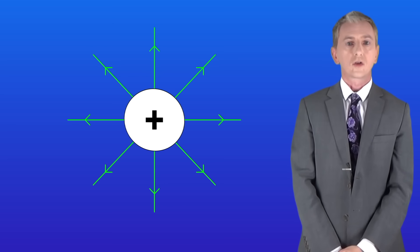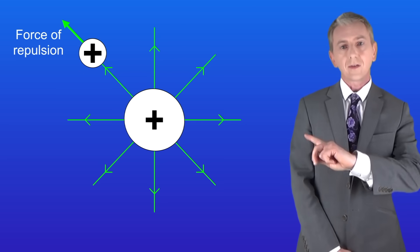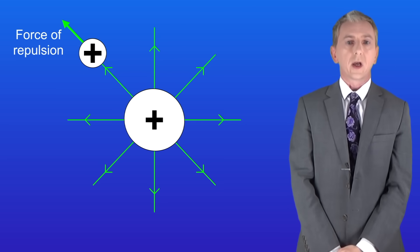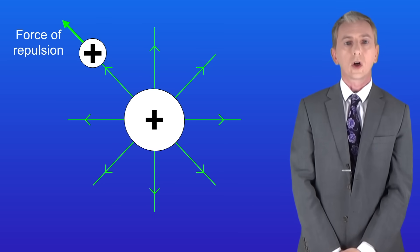Now the arrows on the field lines show the direction of force when a positive object is brought nearby. So as you can see in the case of this example, a positive object experiences a force of repulsion when it's brought near this positive charge.